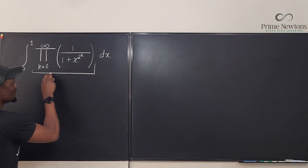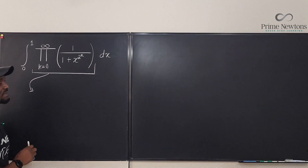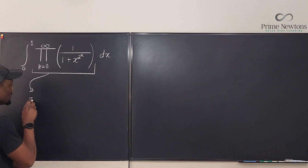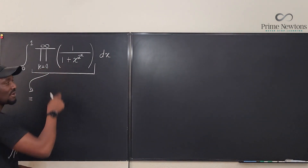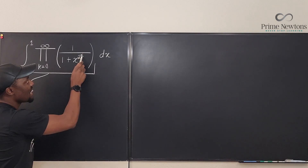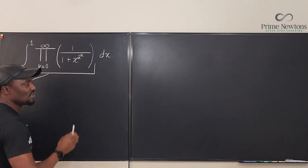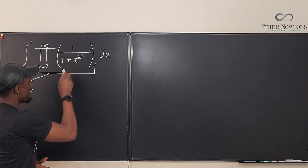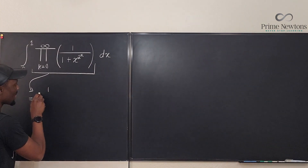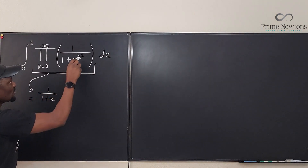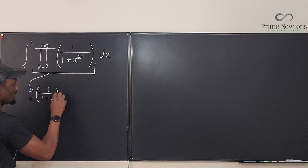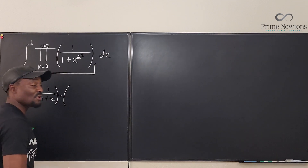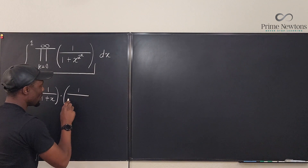This part simply means I'm going to find the first term. I plug in k=0: there's going to be 2 raised to power 0, which is 1. So the first term is 1 over (1 + x raised to power 1). Now I multiply by the next term.